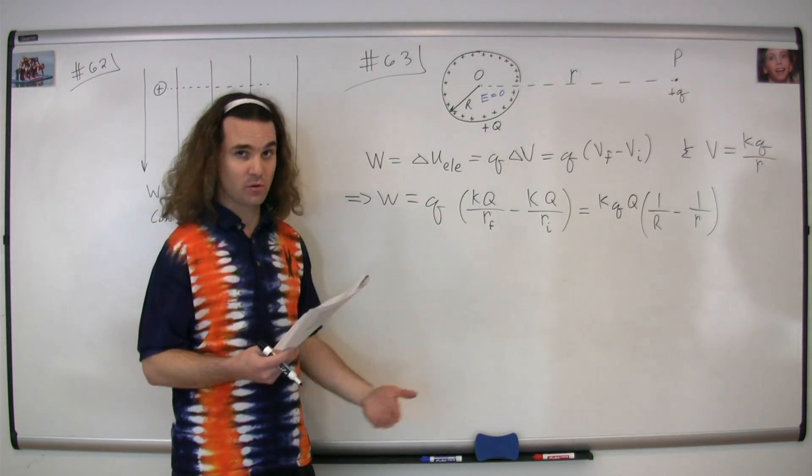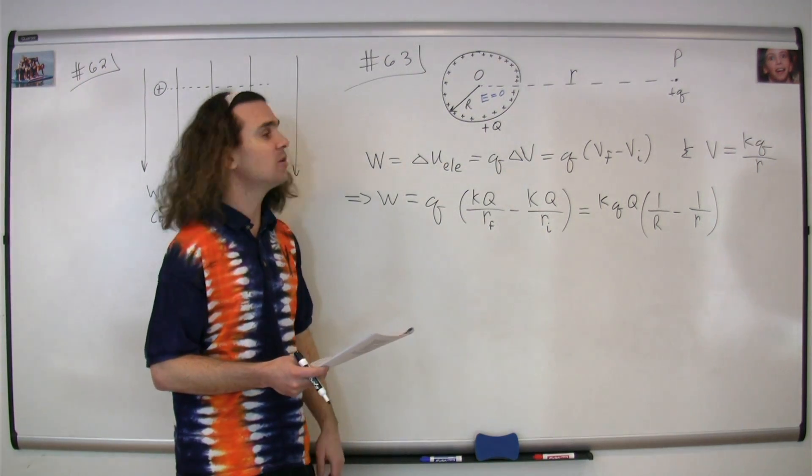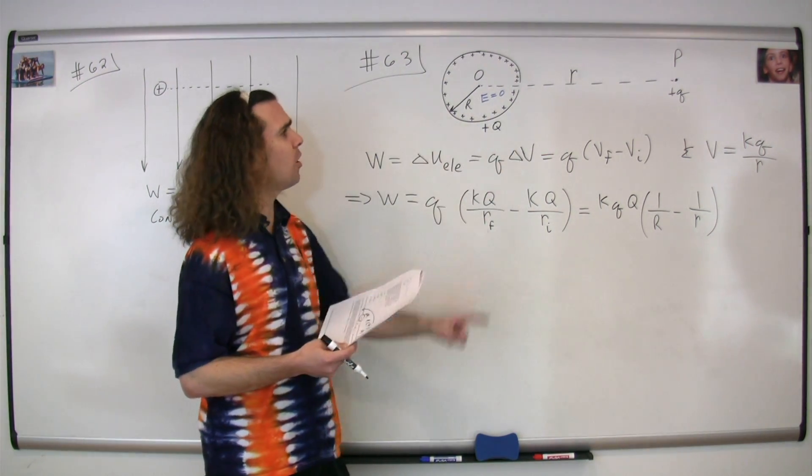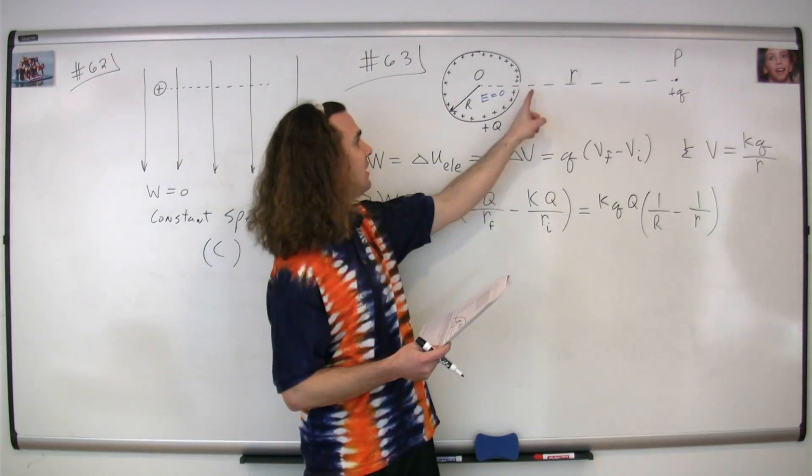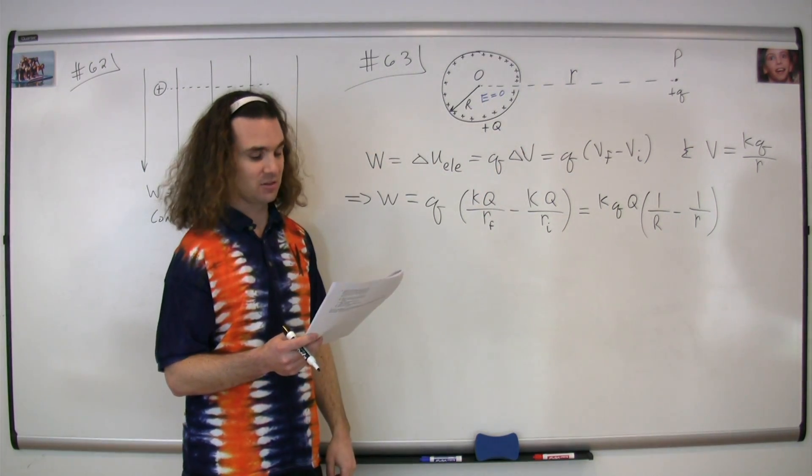It takes zero work to move a charge where the electric field is zero. So the net work to move it from P to O is the same as moving it from P to capital R. This is our correct answer. The correct answer is E.